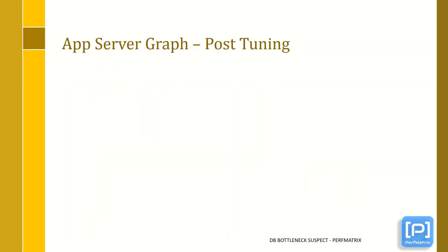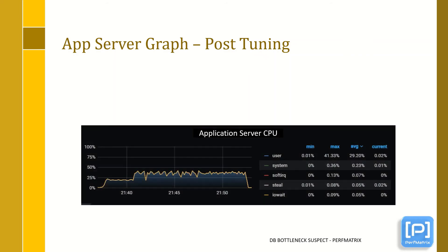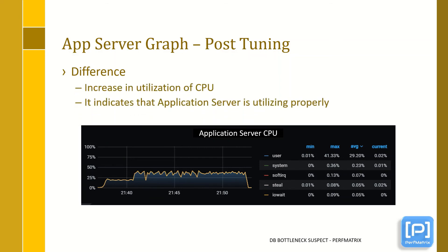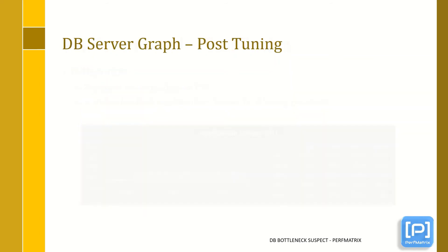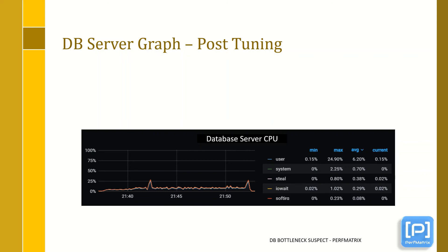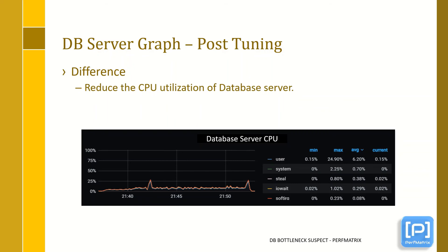Now let's have a look at the results after tuning the DB. The CPU utilization has increased, which indicates that the application server is being utilized properly. The CPU usage reached up to 29%, which was only 10% before tuning was done. Now have a look at the DB server CPU — you can see a drastic reduction in CPU usage. It reduced to 6% from 63% average CPU utilization. This is only due to DB optimization.